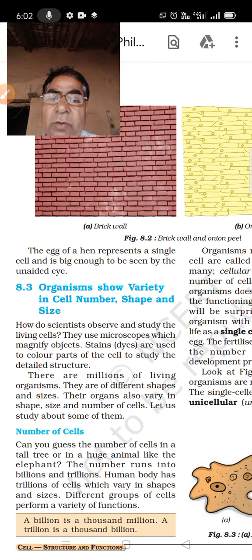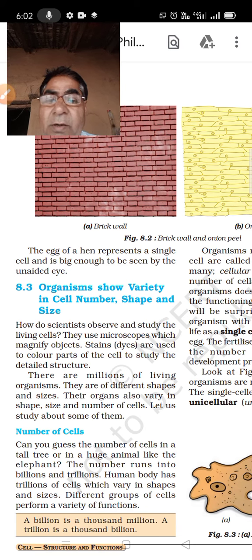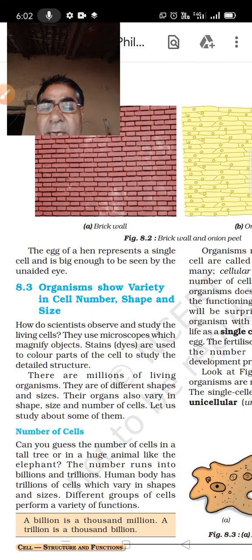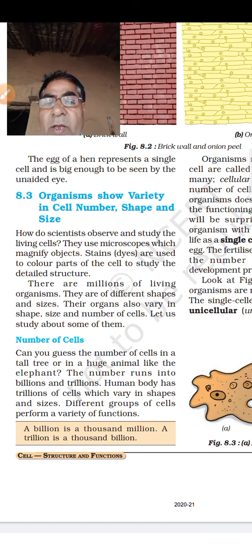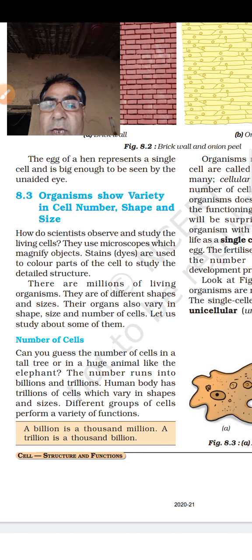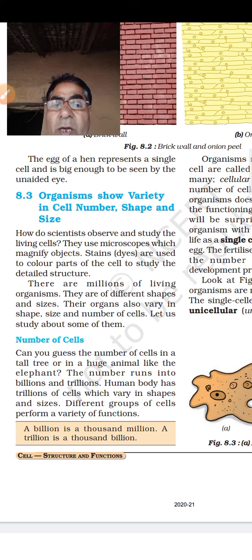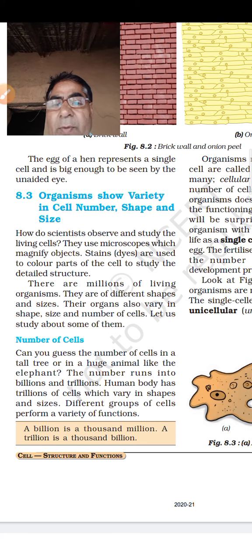Now we will discuss the number of cells, shape, and different types. In a tall tree or in a huge animal like an elephant, the number of cells runs into billions or trillions.